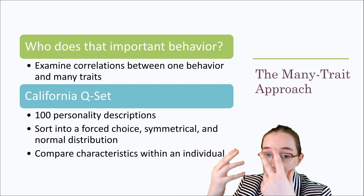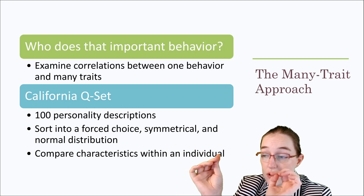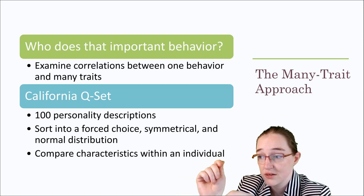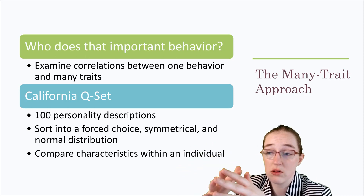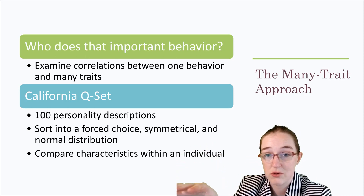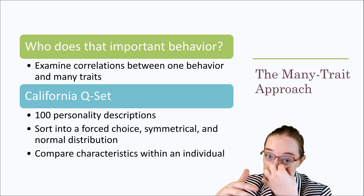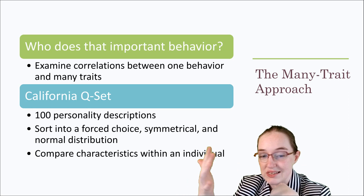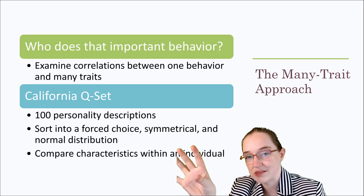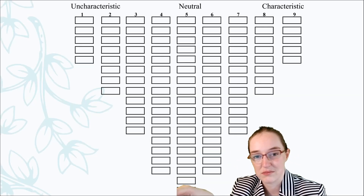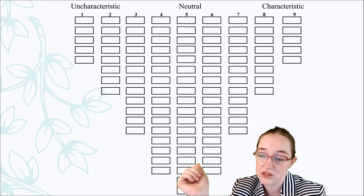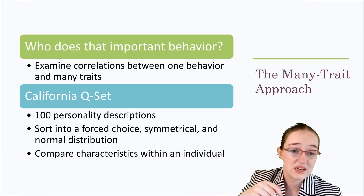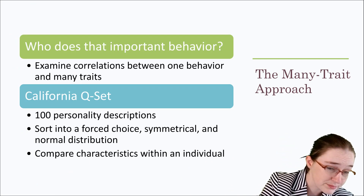To complete the California Q-Set survey, you sort all one hundred traits into a forced-choice normal distribution. You're comparing all hundred characteristics within the same person, so only a few can be really descriptive of you, most are kind of descriptive, and some are really not descriptive. The distribution follows a bell-shaped curve. Example items include: 'is unpredictable and changeable in behaviors and attitudes,' 'is vulnerable to real or imagined threat,' 'generally fearful,' and 'is a talkative individual.'